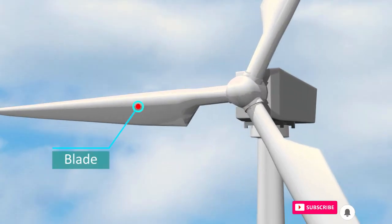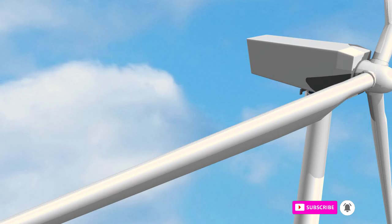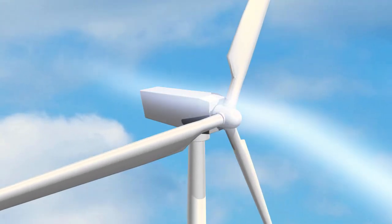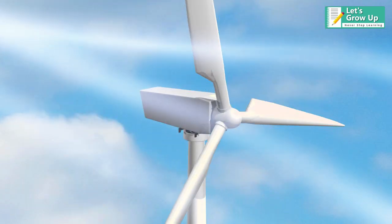Blades. The blades are the first components of the turbines, usually two or three, that are affected by the wind. The wind causes the blades to rotate.